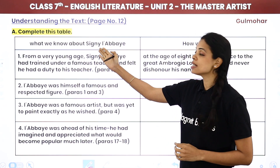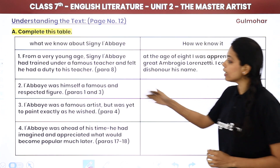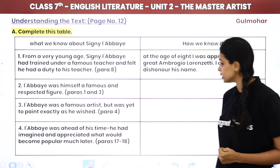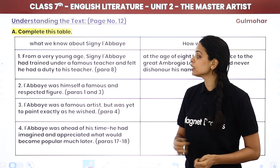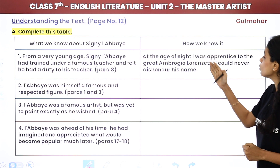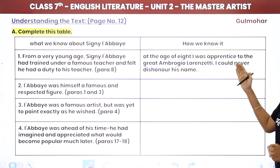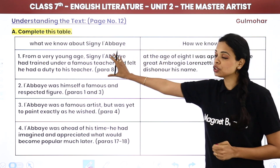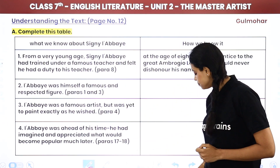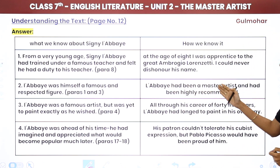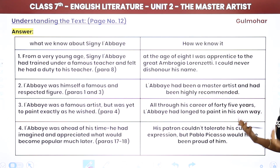The first question is: what do we know about Sino Libai and how do we know it? From a very young age, Sino Libai had trained under a famous teacher and felt he had a duty to his teacher. We know this from the line: 'At the age of eight, I was apprenticed to the great Ambrosio Lorenzetti. I would never dishonor his name.' Libai had been a master artist and was highly recommended — these are the lines that tell us he was very famous and respected.